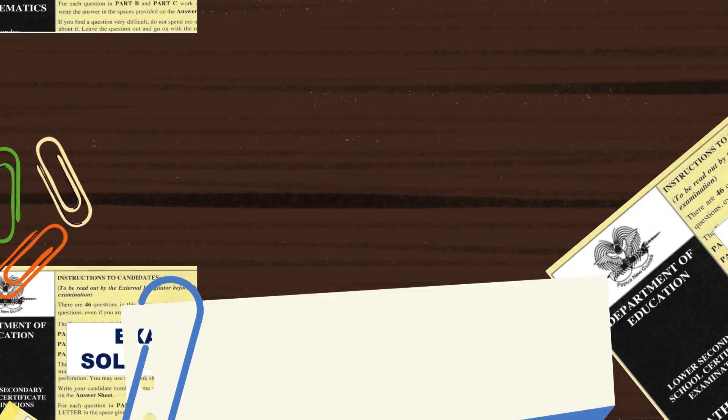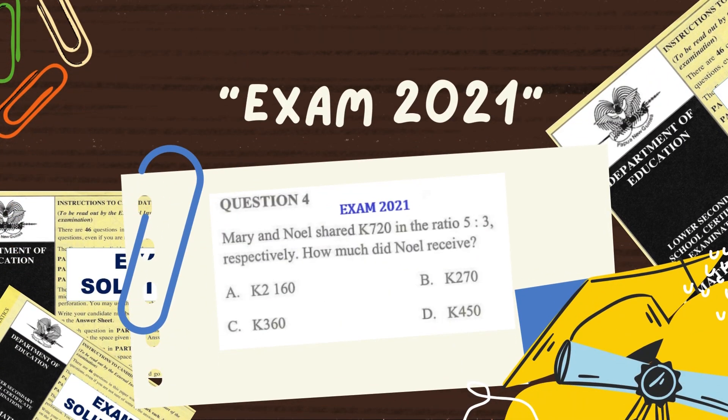A similar type appeared in the 2021 exam, question number 4. The question asked was: Mary and Noel shared 720 kina in the ratio 5 is to 3, respectively. How much did Noel receive?